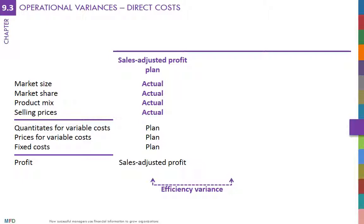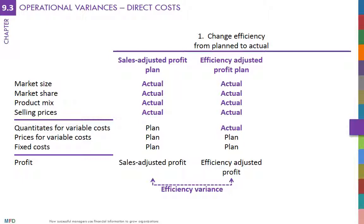To estimate the impact of changes in the efficiency of production, a new profit plan is calculated. It is the same as the sales-adjusted profit plan, except that it uses actual efficiency rather than the planned efficiency.